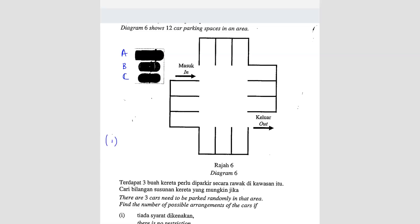So the first one, out of the 12, you have to pick 3, 12P3. That is all the different ways you can arrange the 3 cars. So it's 1,320 ways. This one is no restriction. Next.